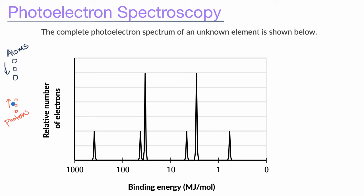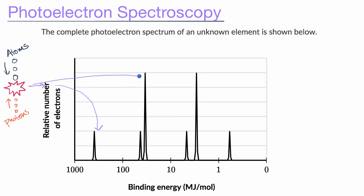These photons are high enough energy — they're typically X-ray photons — so that when they collide, they can overcome the binding energy of even the core electrons. As those electrons get knocked out, they enter a magnetic field that deflects them and makes them hit a detector. Electrons closer to the nucleus have the highest binding energy, so more photon energy is used to knock them off, leaving less for kinetic energy. So those inner electrons don't get as far, while outer electrons — with the lowest binding energy — get more kinetic energy and hit the detector further away.